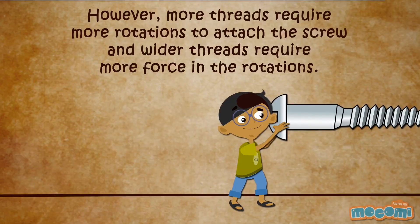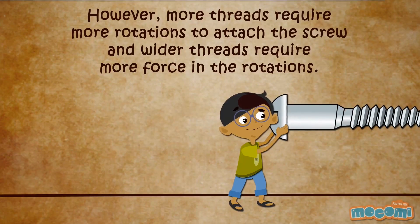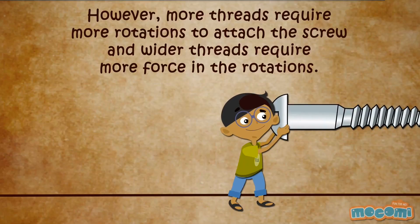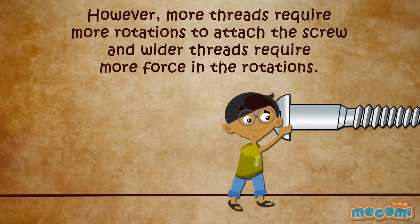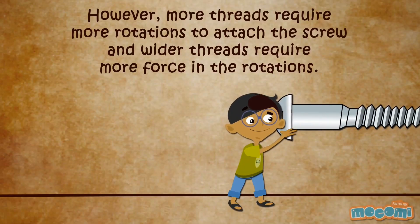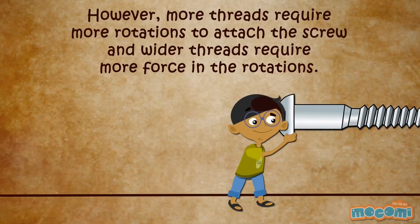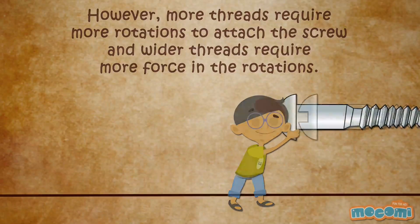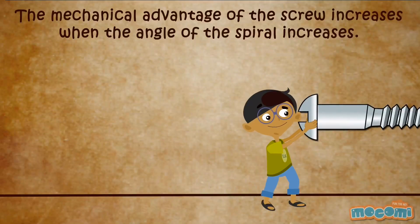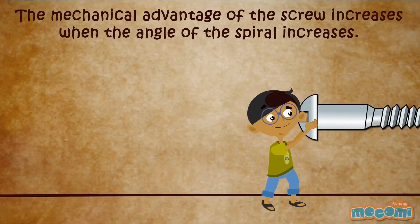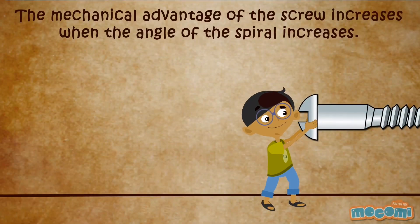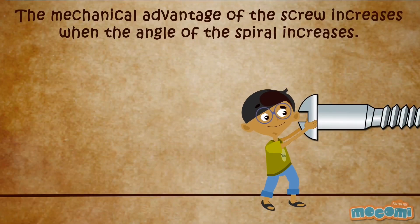However, more threads require more rotations to attach the screw, and wider threads require more force in the rotations. The mechanical advantage of the screw increases when the angle of the spiral increases.